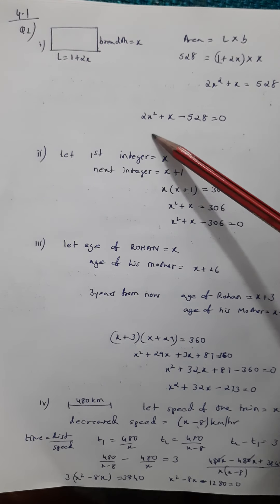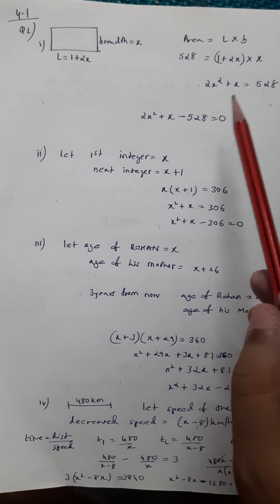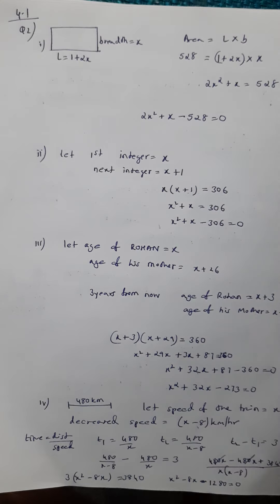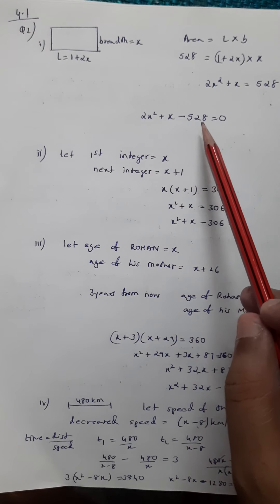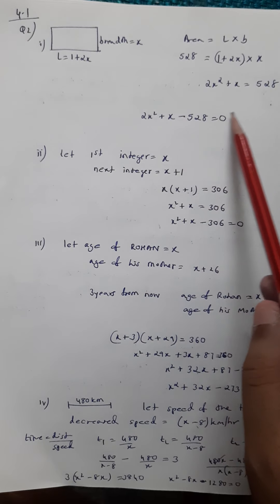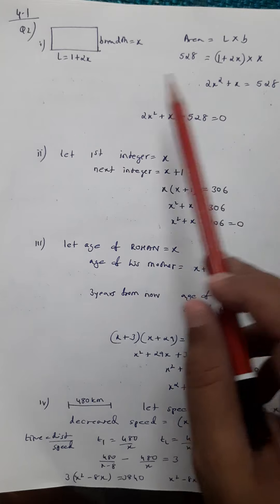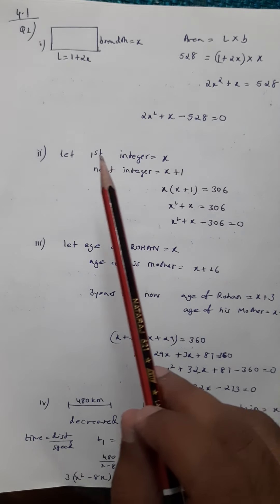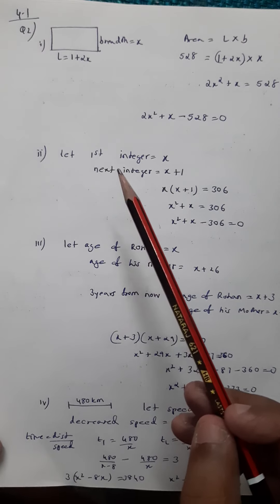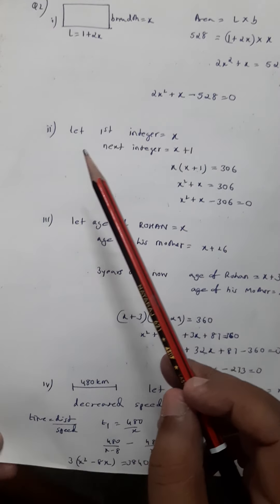Bring everything to one side, so you get the quadratic: two x squared plus x minus 528 is zero. We can identify a quadratic by looking at the highest power, which is two, in the form ax squared plus bx plus c equals zero. So this is a quadratic equation. We have to do four parts, and in all four parts we make a quadratic equation.